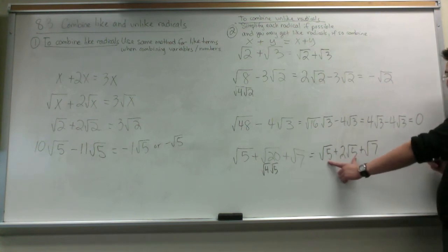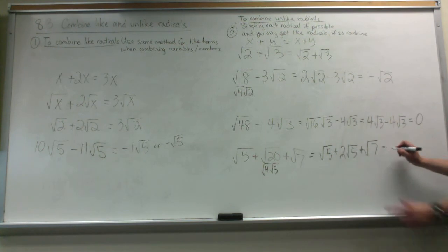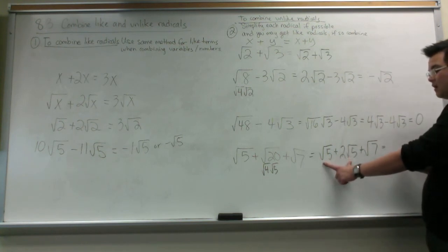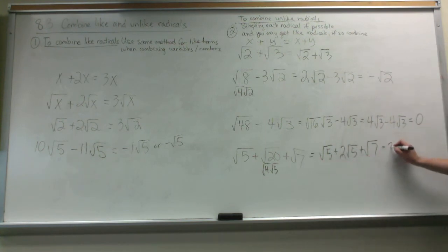Now here I have two like terms in the beginning but an unlike term here. So all I'm going to do is I'm just going to combine these two together. Root 5 plus 2 root 5 is 3 root 5. And then the root 7 I'm just going to write as plus root 7.